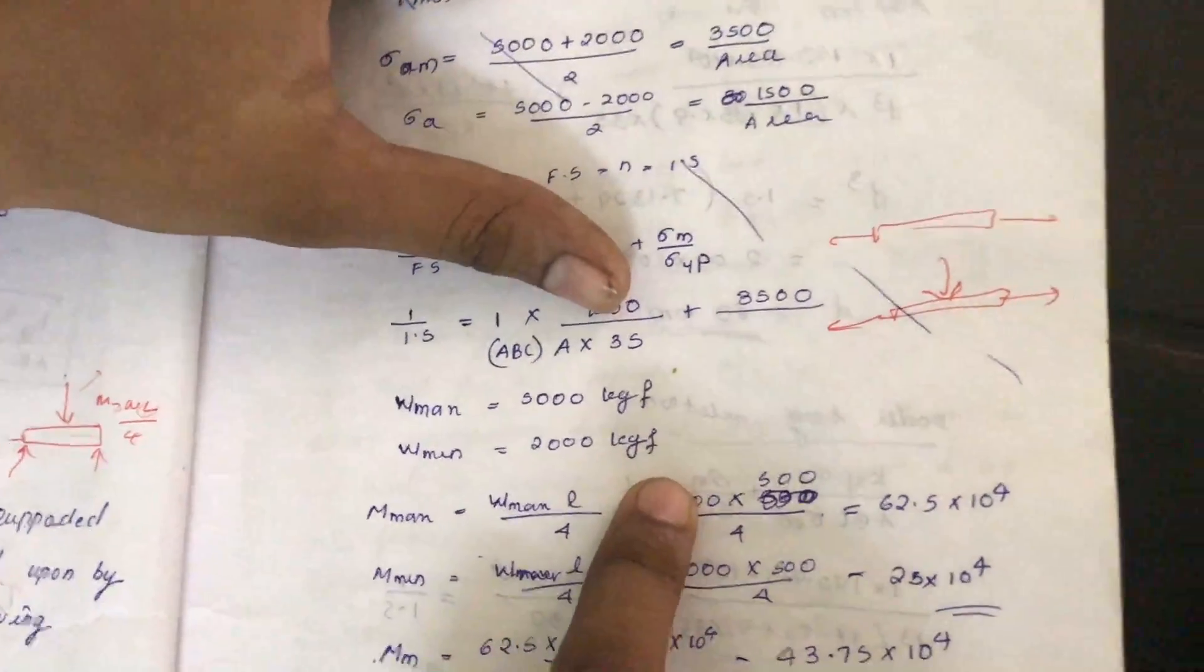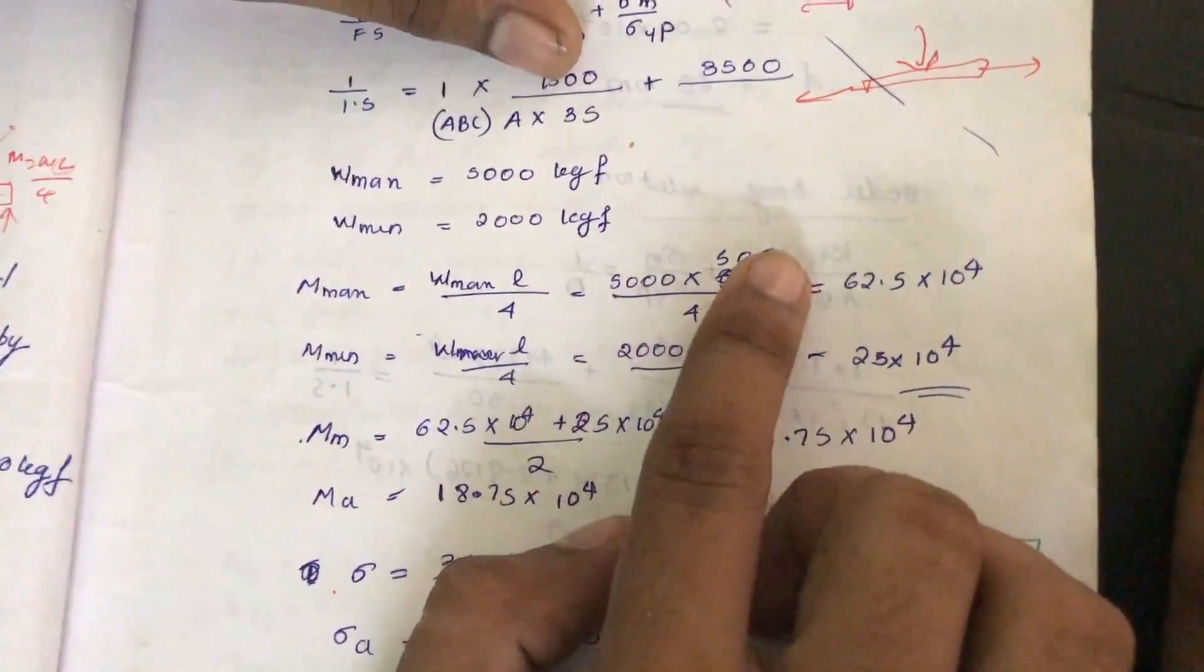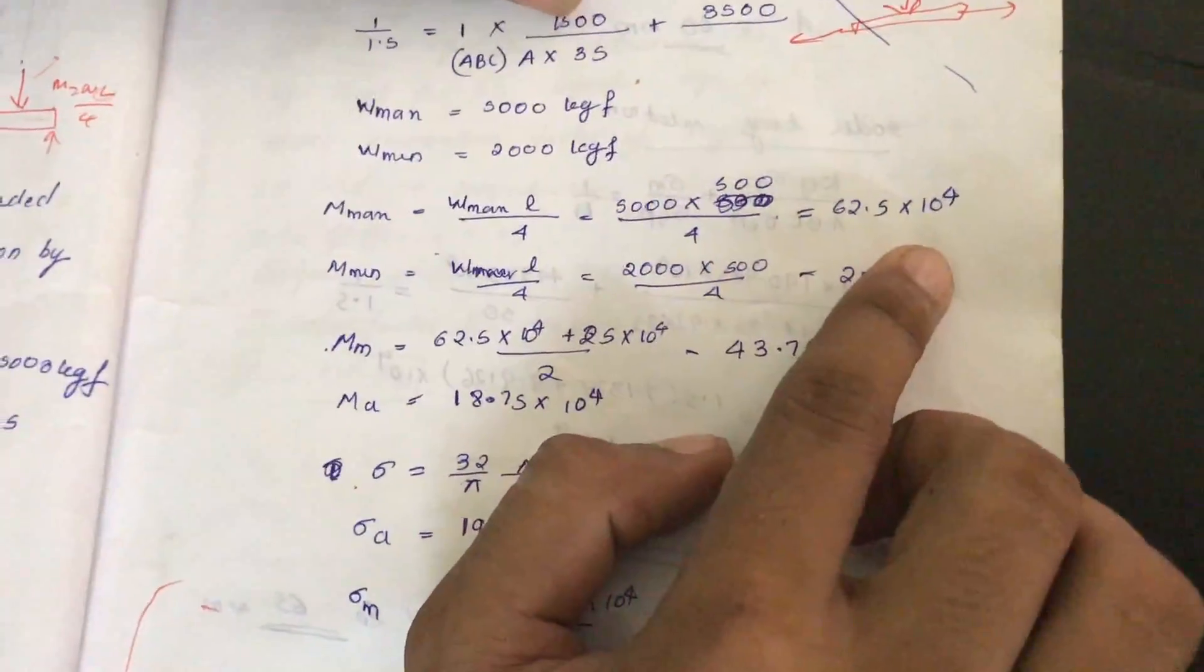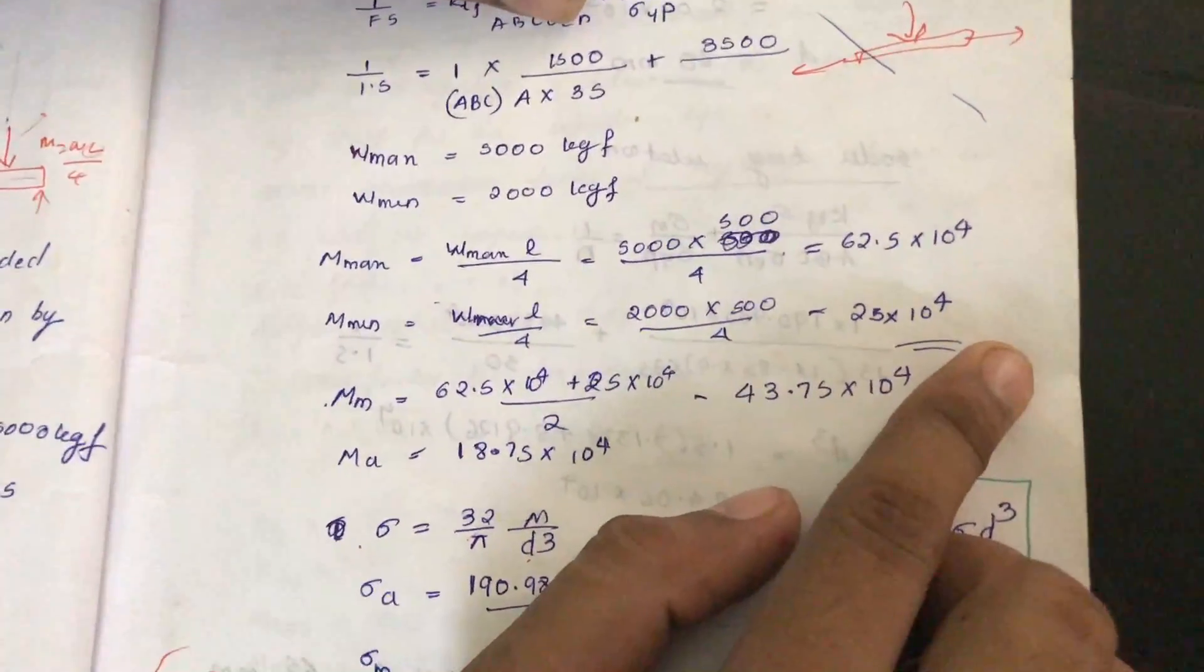Since it's not an axial force, there will be a moment acting. Maximum moment equals WL/4: 5000 times 500 divided by 4 gives M max. Similarly, M minimum equals W minimum times L/4, 2500 by 4, gives M minimum.